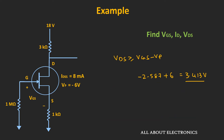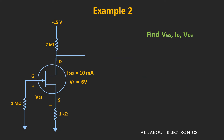Now let's take one more example for the P-channel JFET. The P-channel JFET is configured in the self-biased configuration, and we are asked to find VGS, ID, and VDS. The circuit looks almost identical to the N-channel circuit, but the biasing voltages are reversed — VDD is negative, the current ID flows from source to drain, and the pinch-off voltage VP is positive.